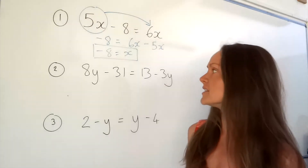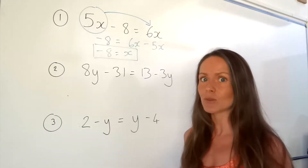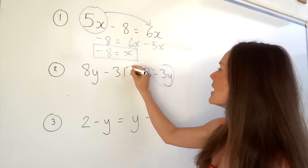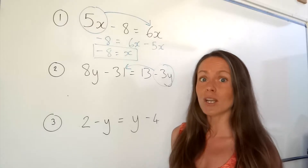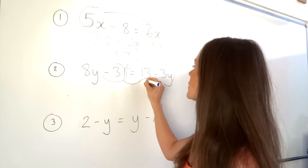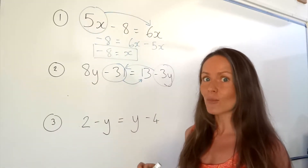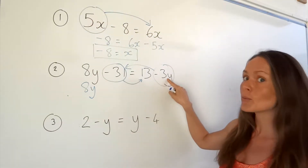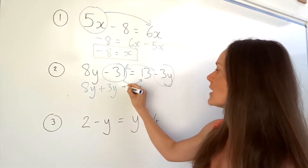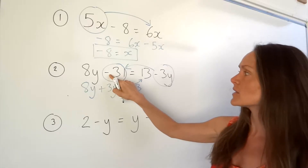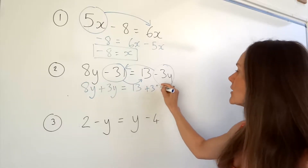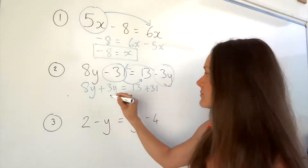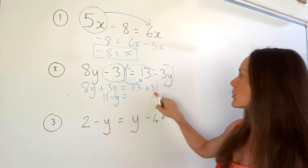On to the next one. We want to put y's on one side, numbers on the other, and I'm going to try to move the smaller y term in order to keep the y's positive. So negative 3y is smaller than 8y, so I'm going to move that one to the left-hand side of the equals, which means I want all the numbers on the right-hand side. So I'm going to move that negative 31 to the right. Remember, only the ones that are moving are the ones that change sign. So this 8y is fine — it stays where it is. However, this negative 3y changes to a positive. Then I've got the equal sign and the 13 that hasn't moved, and then the negative 31 that changes to a plus. So if I've got 8y and I add 3 more y, that gives me 11y, and on the right-hand side I get 44.